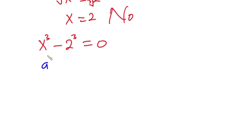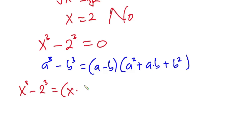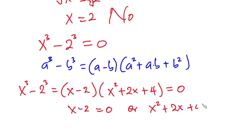If you have a to the third power minus b to the third power, this can be expressed as (a minus b) times (a squared plus a times b plus b squared). So applying this, x to the third power minus 2 to the third power equals (x minus 2) times (x squared plus 2x plus 4), and this is equal to 0.